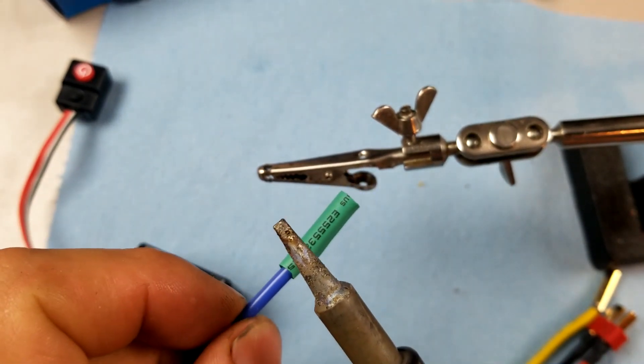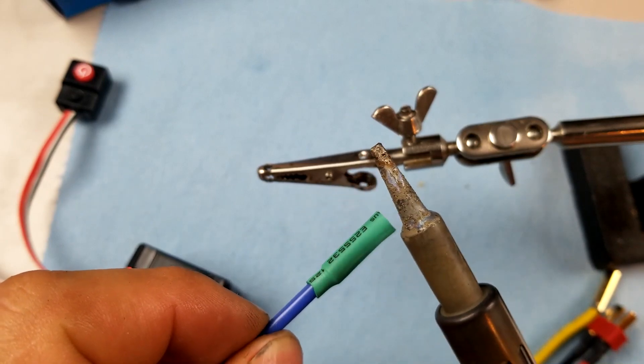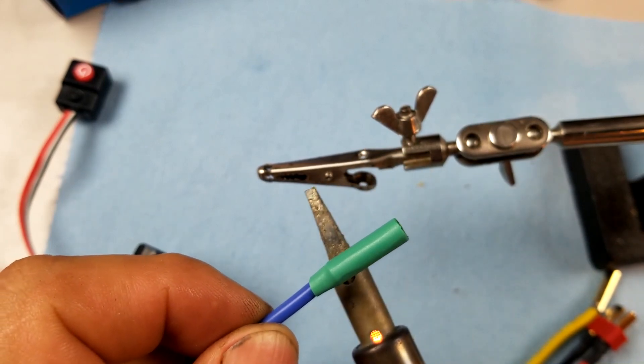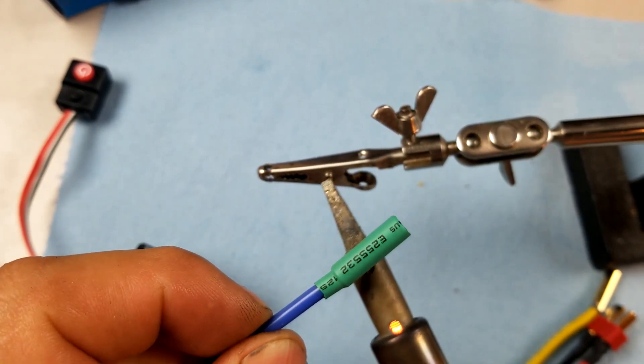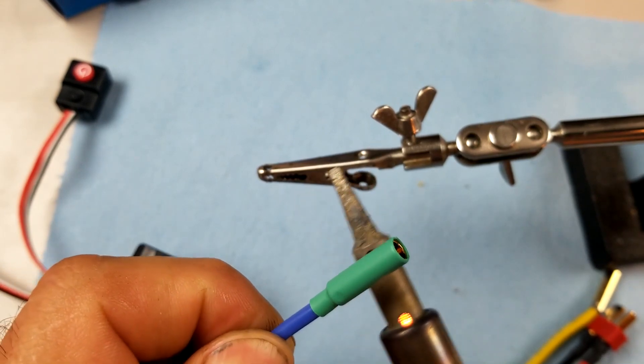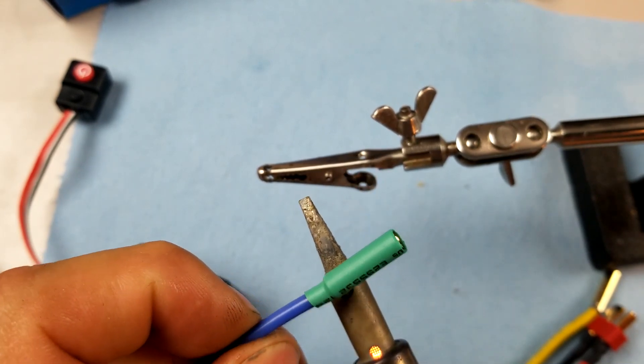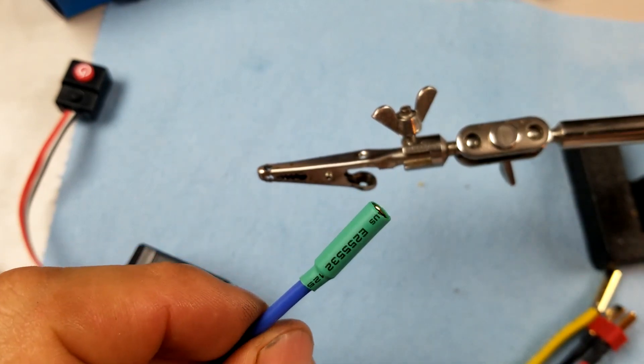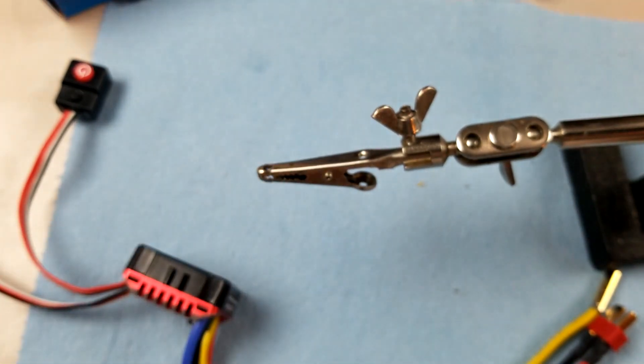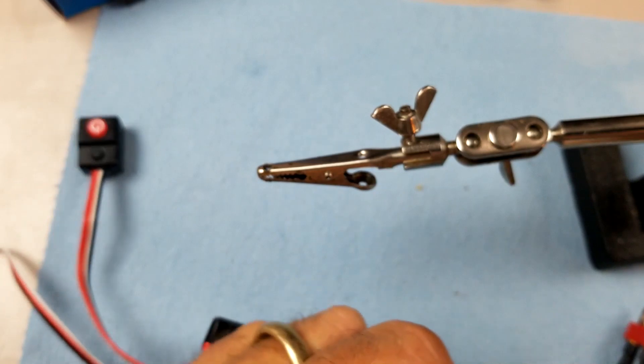So what I do is I put the heat shrink on and then this is actually a torch at the same time and I can just go over it real quick and it will melt it. There we go. Heat shrink is done.